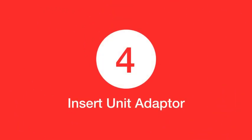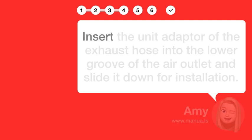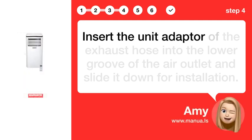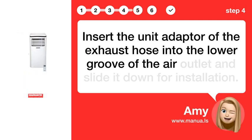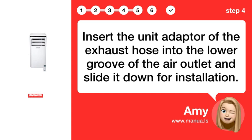Step 4: Insert unit adapter. Insert the unit adapter of the exhaust hose into the lower groove of the air outlet and slide it down for installation.